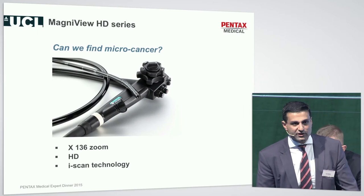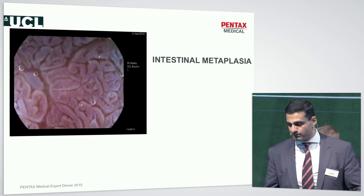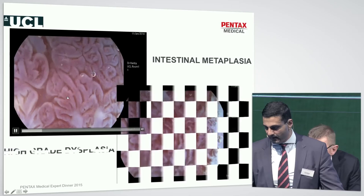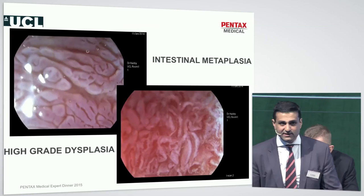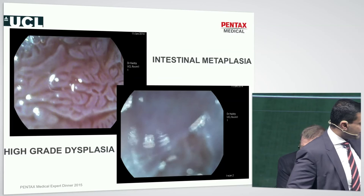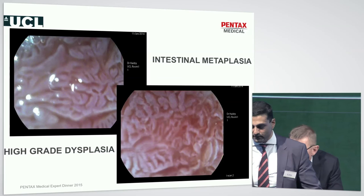This is a new piece of kit — a high-definition MagnaView scope with 136 times zoom. This is a patient with intestinal metaplasia. On the contralateral wall is high-grade dysplasia. Just by investing a little bit of time, you can see the very nice regular architecture in one area, and in the bottom, completely distorted irregular vasculature — that's high-grade dysplasia.